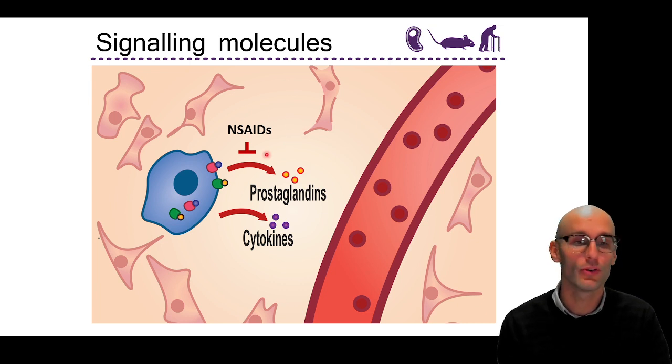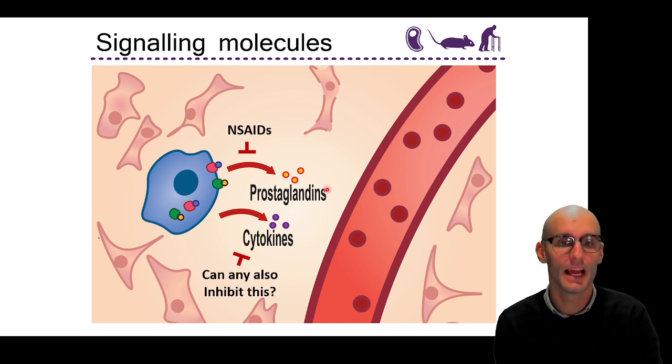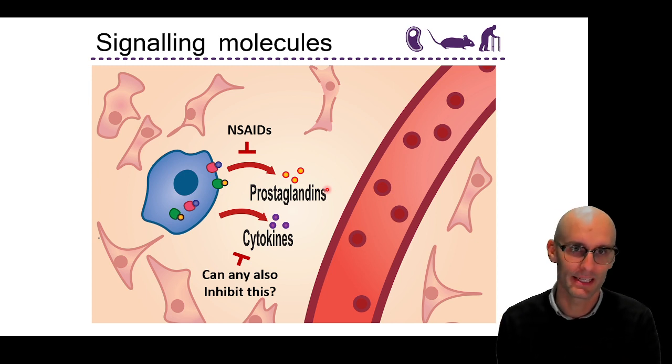So, essentially, we know non-steroidal anti-inflammatories do this. They inhibit the production of prostaglandins. Do they also inhibit the release of interleukin-1-beta, the inflammatory cytokine? That's what we were doing.